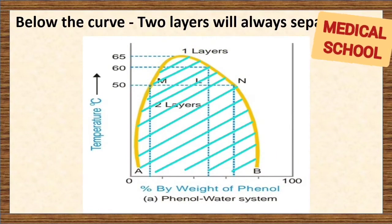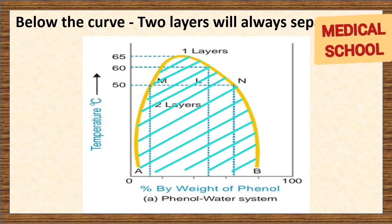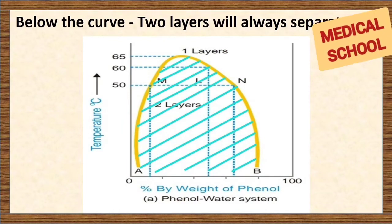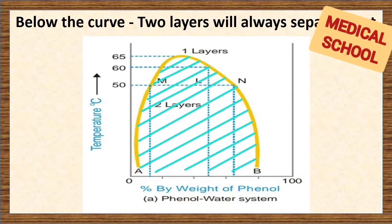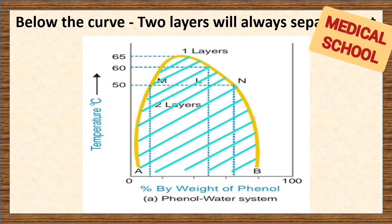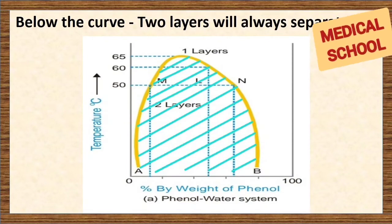Similarly, the blue line region, which is below the curve, is where the two layers will always separate out. It gives the compositions of the conjugate solutions constituting the two layers.